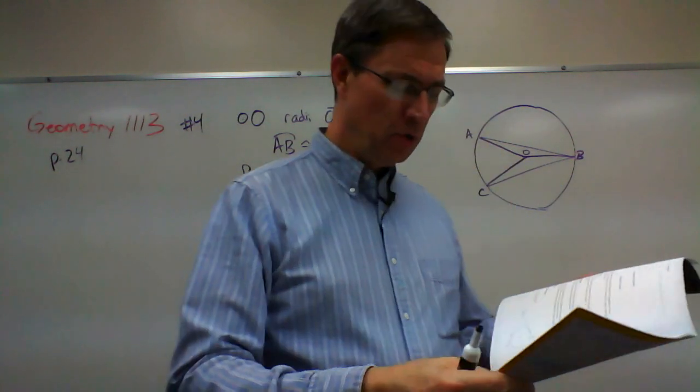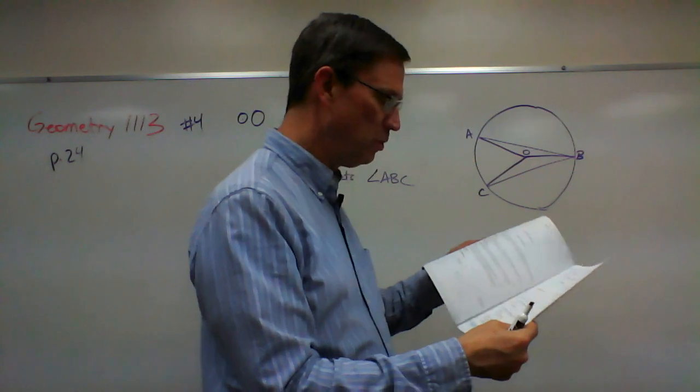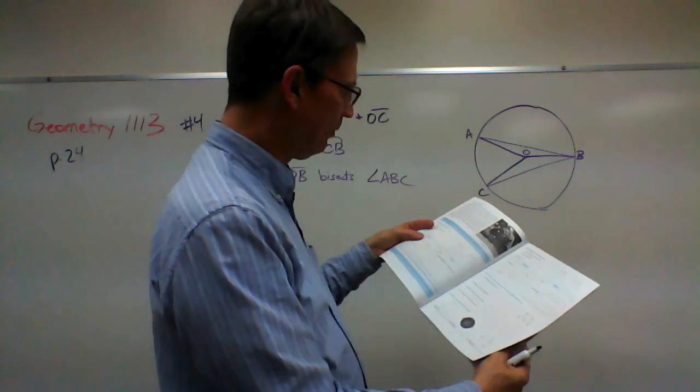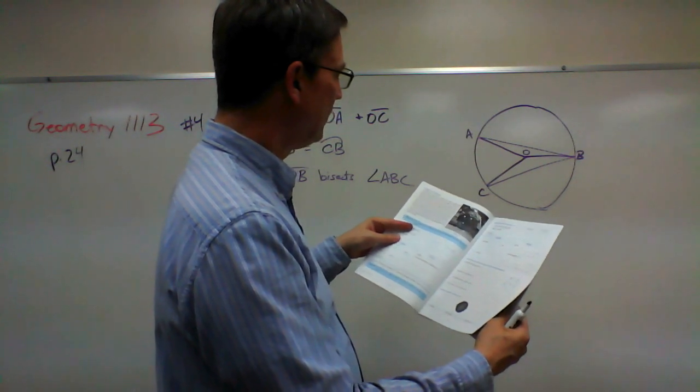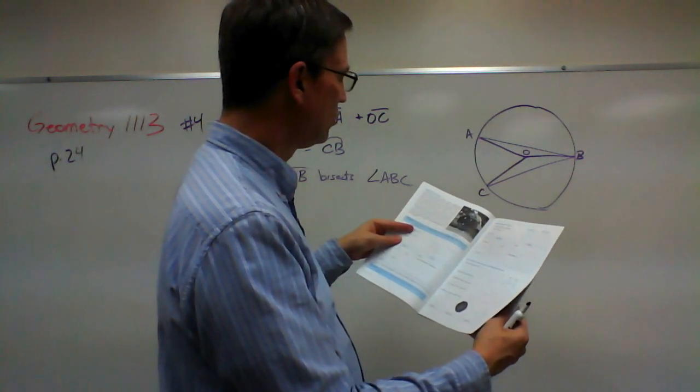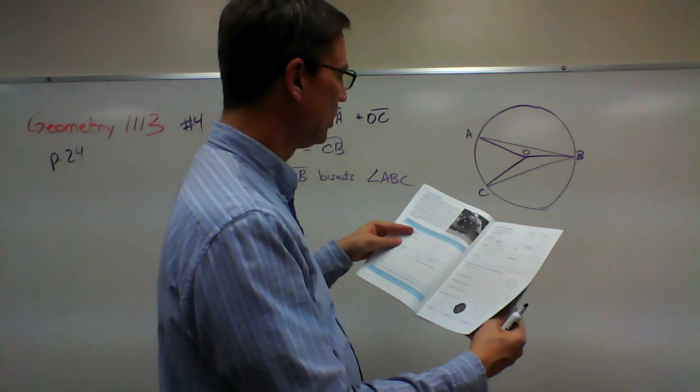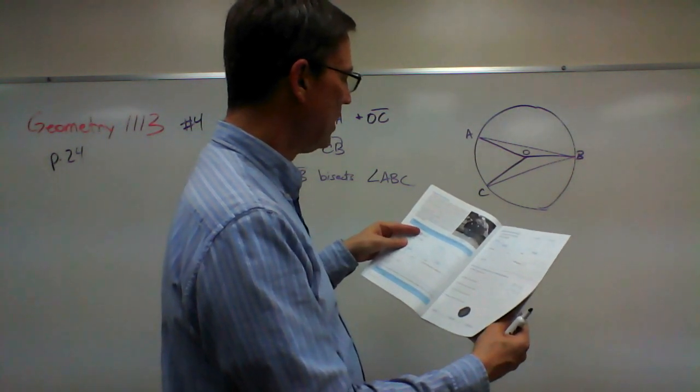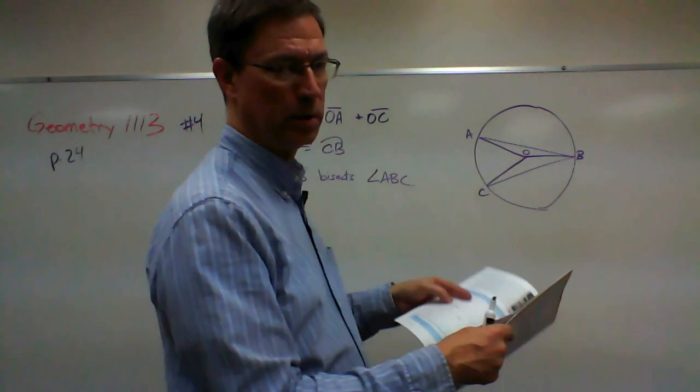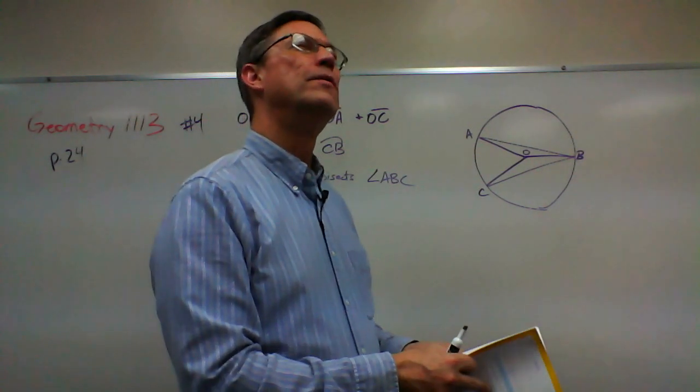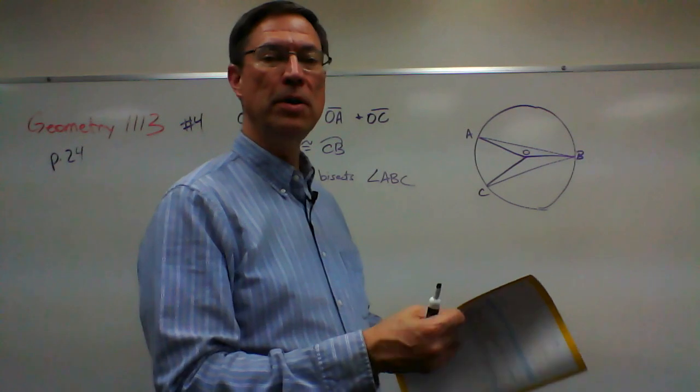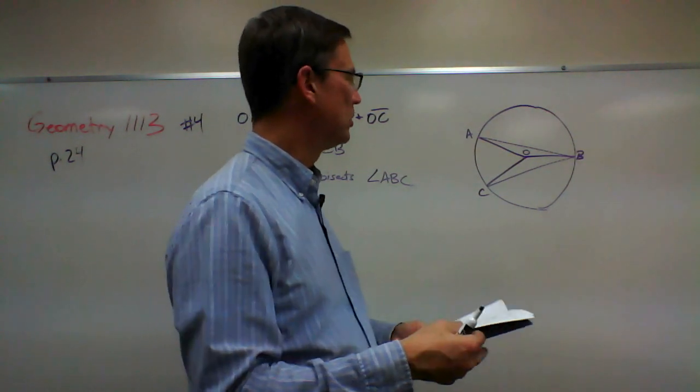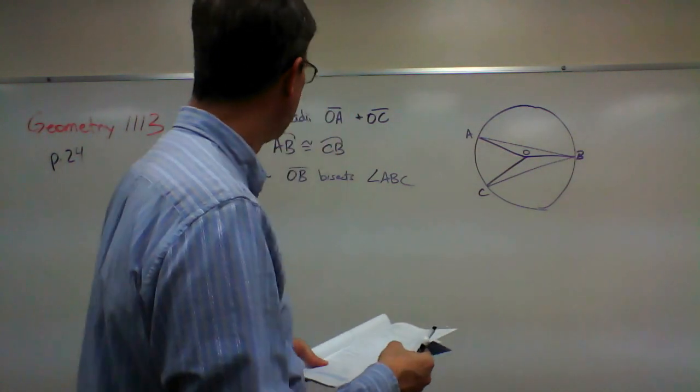And they do give us a clue here that we're going to use Theorem 47. So I'm flipping back to page 21. Theorem 47 says if in the same circle or congruent circles two arcs are congruent, then their cords are congruent. If two arcs are congruent, then their cords are congruent. So let's see how we can use this.